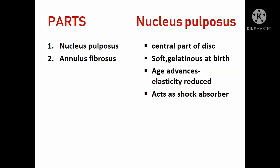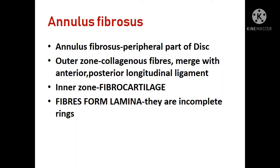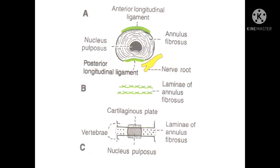The nucleus pulposus is the central part of the disc — it is soft and gelatinous at birth. As age advances, the elasticity of the intervertebral disc reduces. It acts as a shock absorber. The annulus fibrosus is the peripheral part of the disc. Its outer zone mainly contains collagenous fibers that merge with the anterior and posterior longitudinal ligaments. The inner zone contains fibrocartilage, with fibers forming incomplete rings called laminae. In this picture, we can see the merging of the annulus fibrosus with the anterior and posterior longitudinal ligaments.